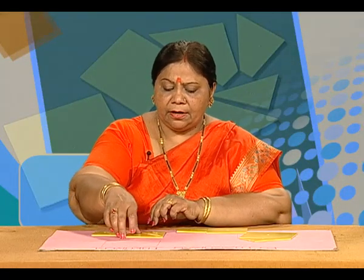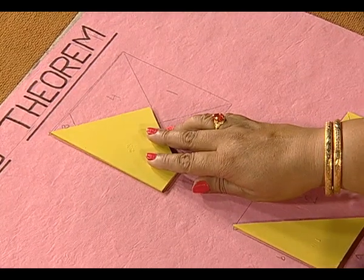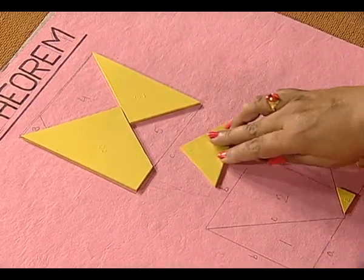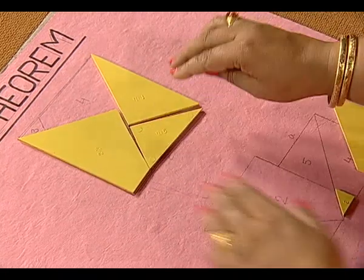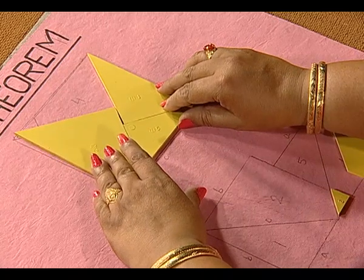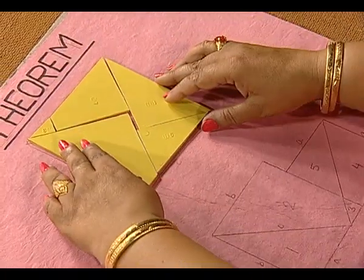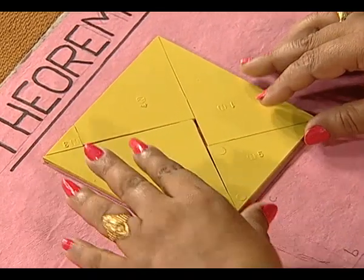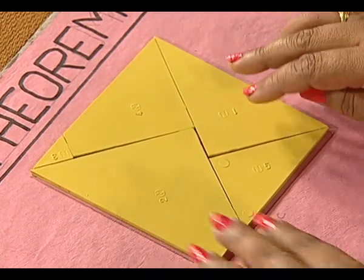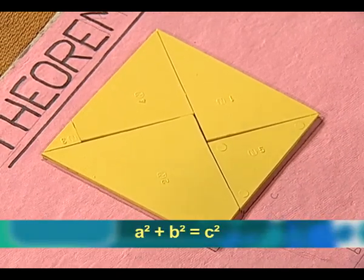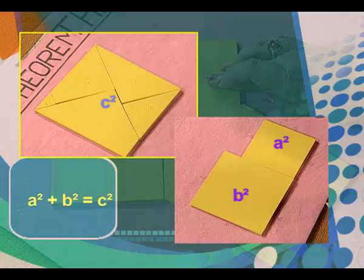Let us pick up these pieces and arrange them on this square of side length c units. We can see that these five parts exactly cover the square of side length c units. Thus we have verified the Pythagoras theorem: a² plus b² is equal to c².